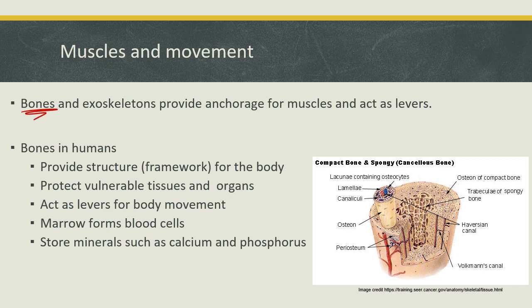Let's talk about bone tissue. Bones and exoskeletons of insects provide anchorage for muscles and act as levers. These are not the only functions of bones though. In us humans, they also provide structure — we would be sad jelly-like blobs of skin and organs if it weren't for our bones giving us shape. Bones also provide protection for some of our tissues and organs. For example, the heart is behind the sternum because the job of the sternum is to help protect the heart.